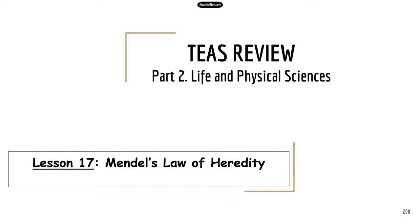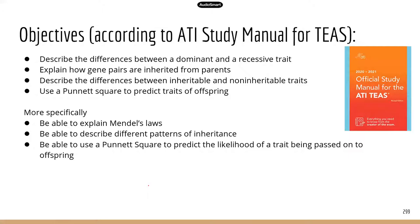Hey everyone, Dr. Yu here. Welcome back to another teach review lesson. Today we're going to continue on the genetics aspect, but we're going to look at genetics at the individual level, at the organism level. In particular, we're going to look at how traits are inherited from parents to the offspring following Mendel's laws of heredity. These are the objectives from the official study menu, and we're going to cover all these points.